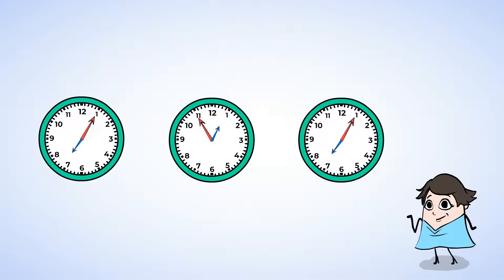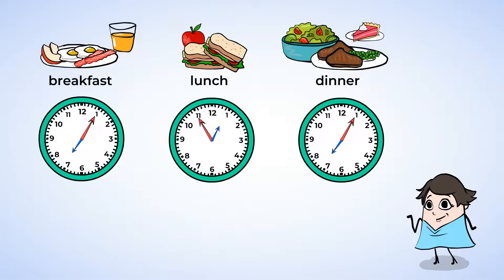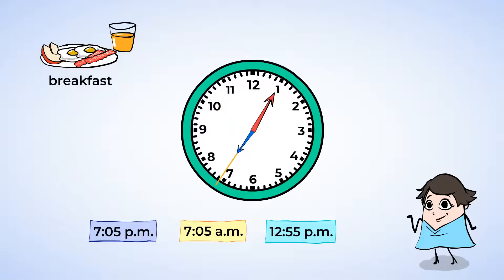Now, the clocks below show when Eric eats breakfast, lunch, and dinner. And here are three different times. Let's match the times to the correct clocks. First, breakfast. We can see the hour hand is between the 7 and the 8. This means the hour is 7. And the minute hand is on the 1, so this means 5 minutes. So breakfast time is 7:05. Ooh, but there are two 7:05 answer choices. 7:05 a.m. and 7:05 p.m. Wait. Breakfast is in the morning, so 7:05 a.m. Great job.